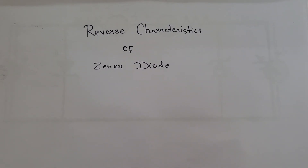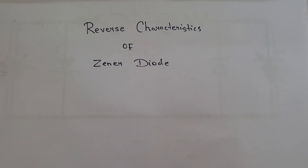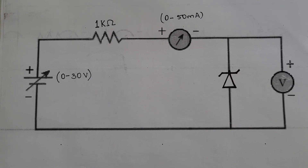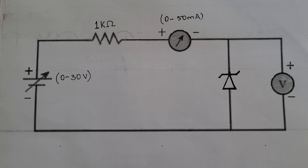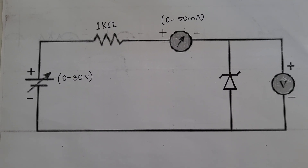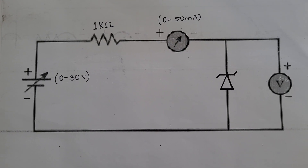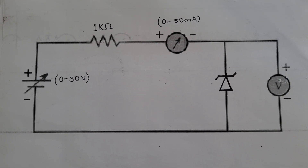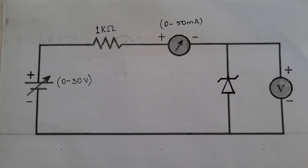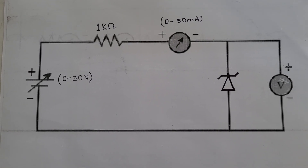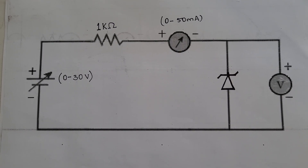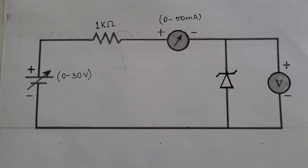Hello students, today we are going to study the reverse characteristic of Zener diode. This is the circuit diagram which we are going to implement on the breadboard. First of all, what is a Zener diode? Zener diodes are semiconductor devices that allow current to flow in both directions but specialize in current flowing in reverse. A Zener diode functions like an ordinary PN junction diode in the forward direction, so the forward characteristic is the same for both PN junction diode and Zener diode.